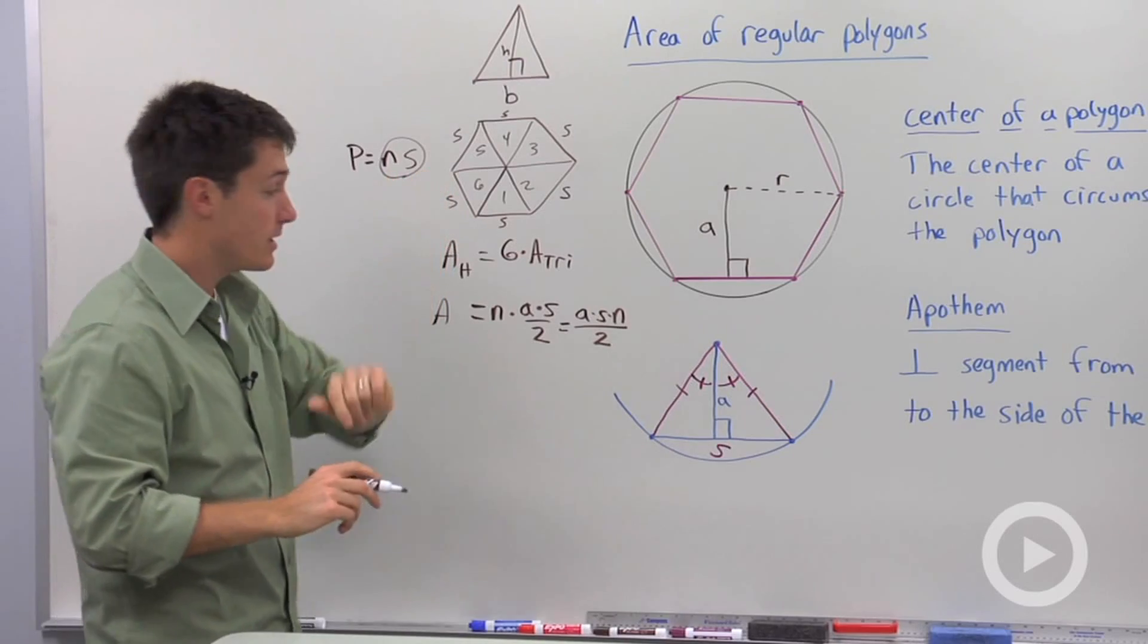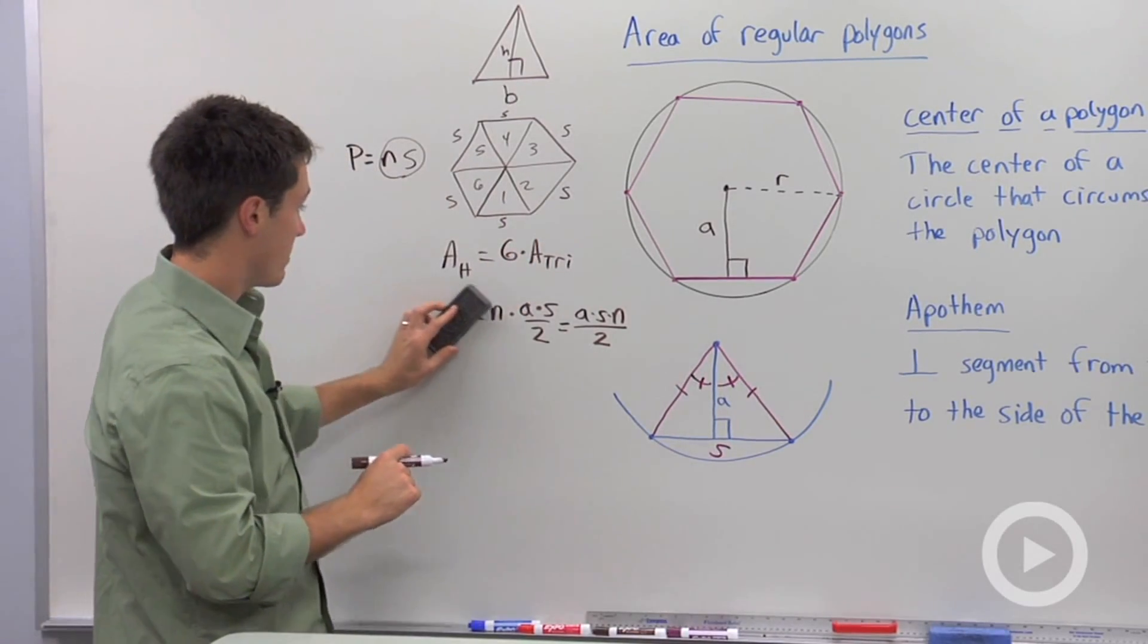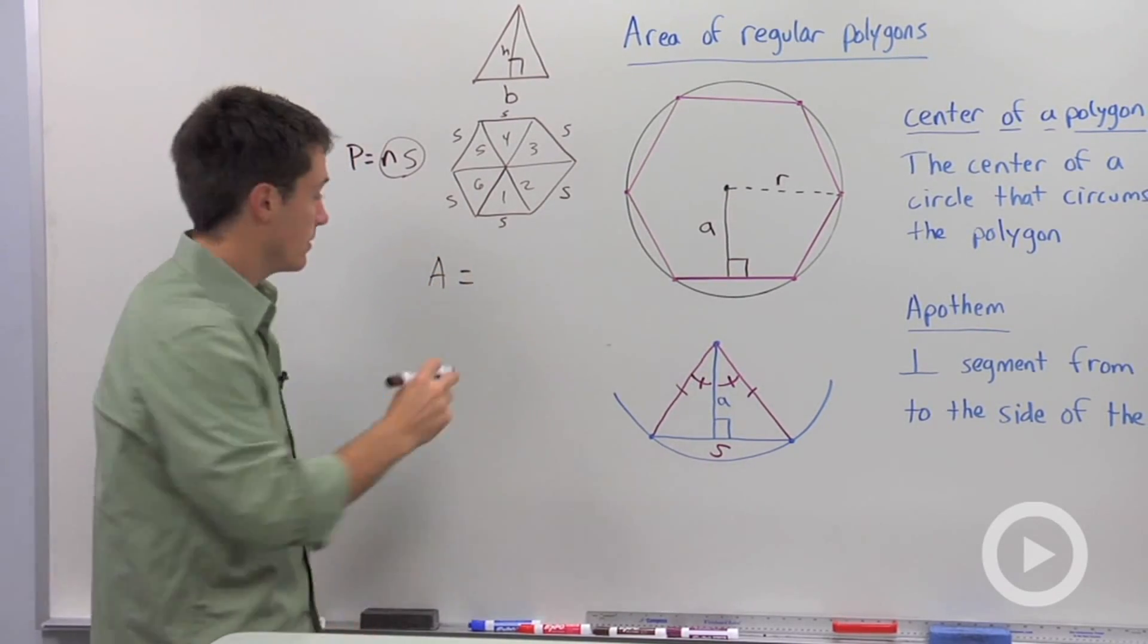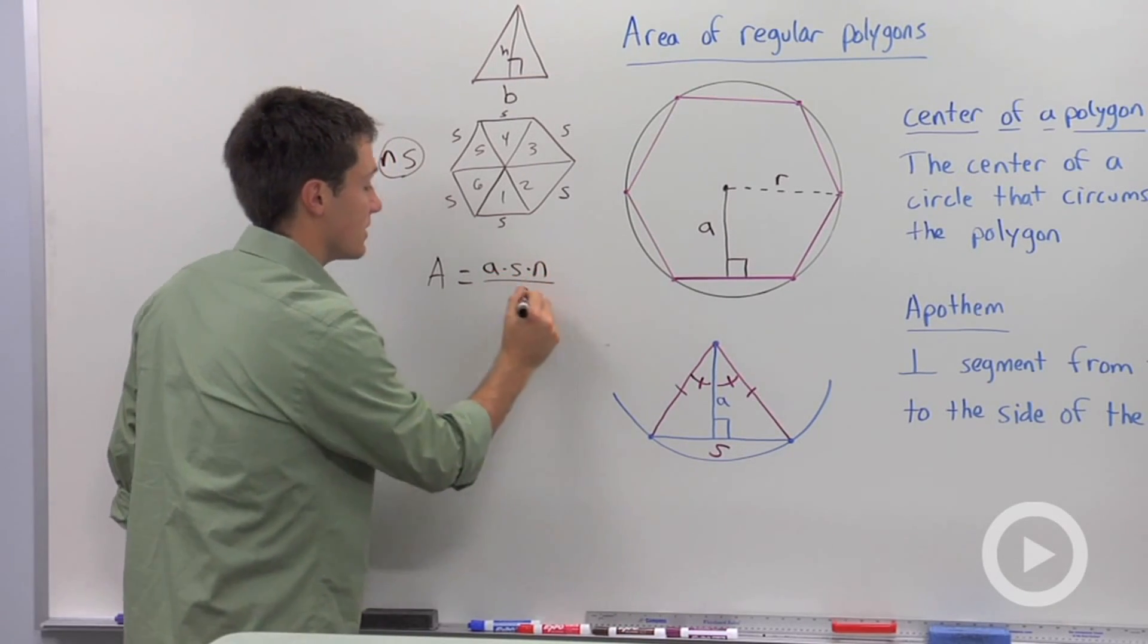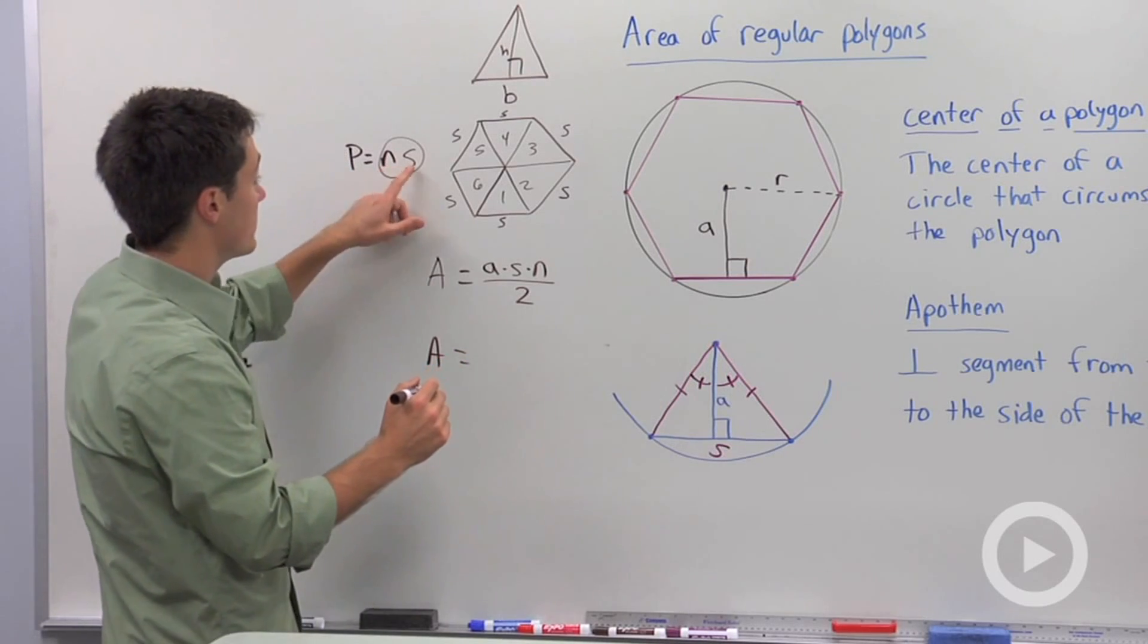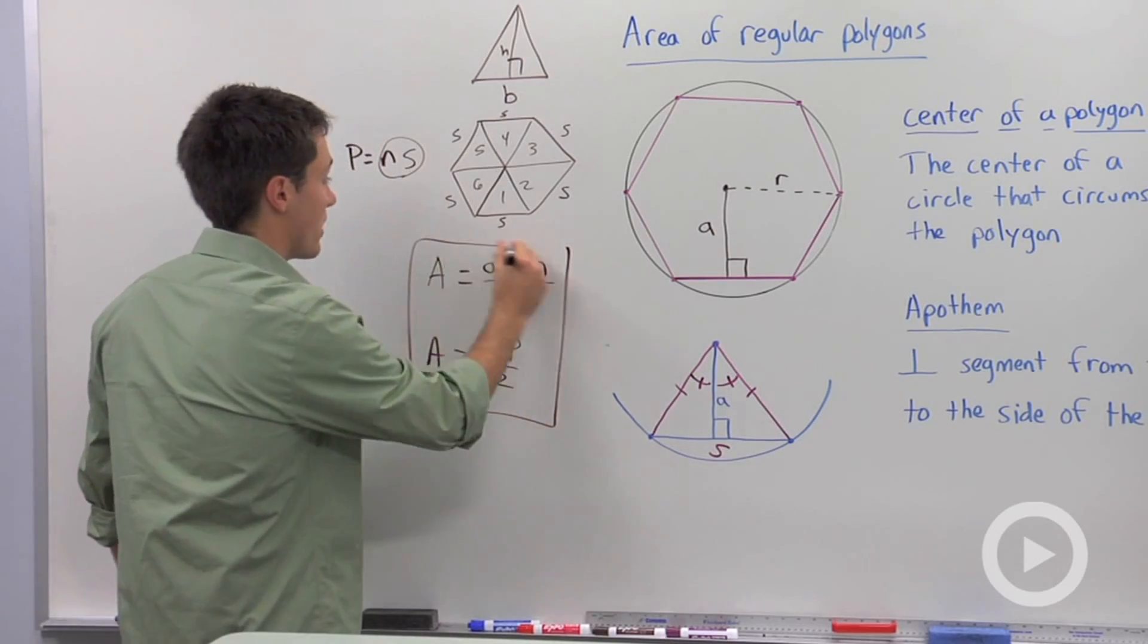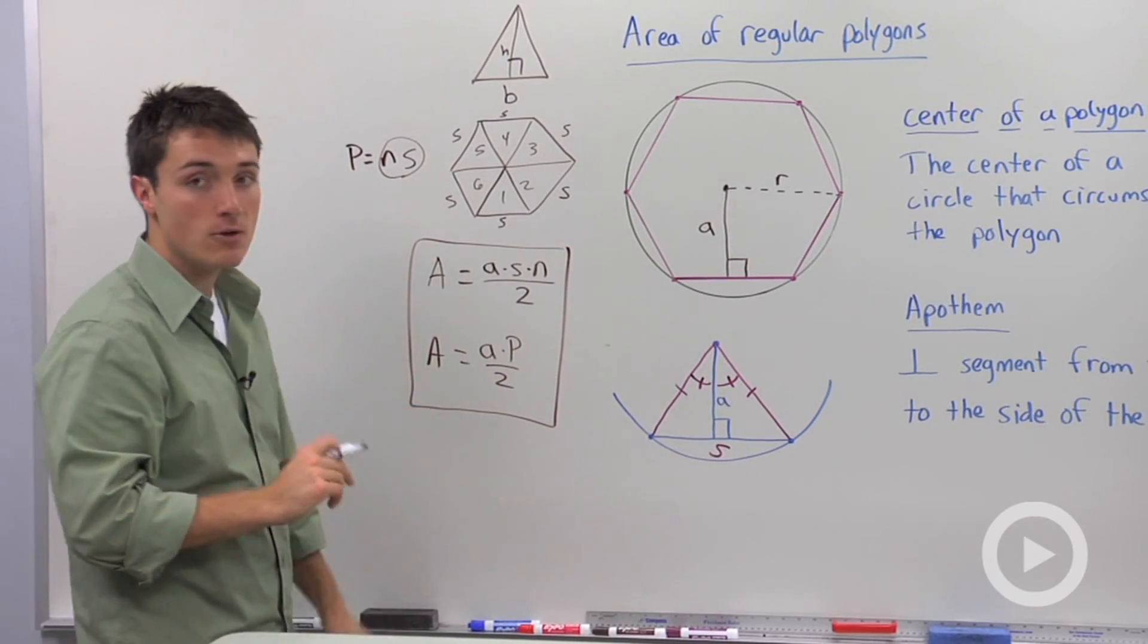So there's going to be two ways to write your area formula. And I'm going to erase this to make it a little bit clearer here. So we're going to say the area of any regular polygon is equal to apothem, times side length, times the number of sides, divided by two. Or if we substitute N times S for P, it's going to be the apothem, times the perimeter, divided by two. So you have two different formulas, both of which will calculate the area of any regular polygon.